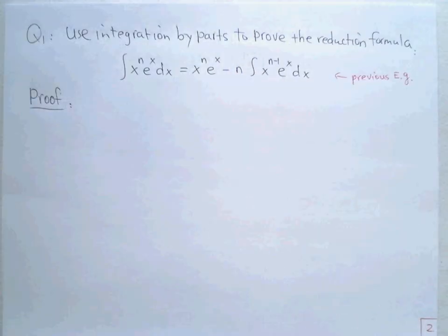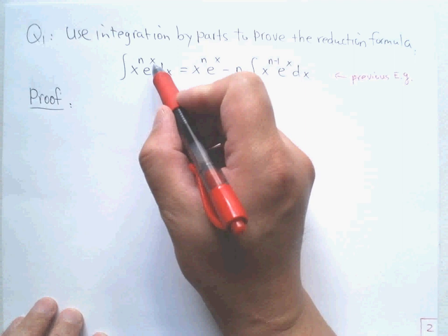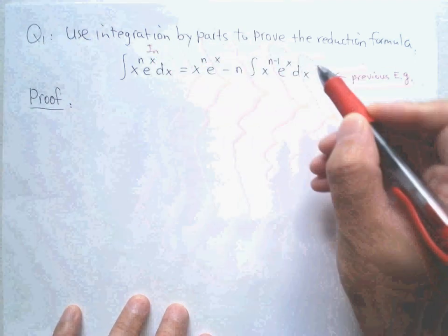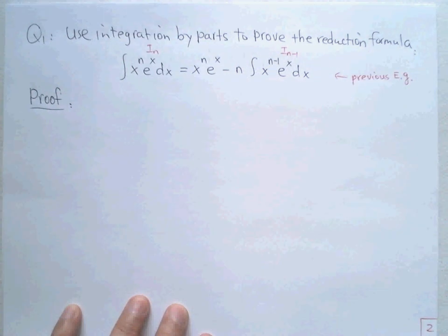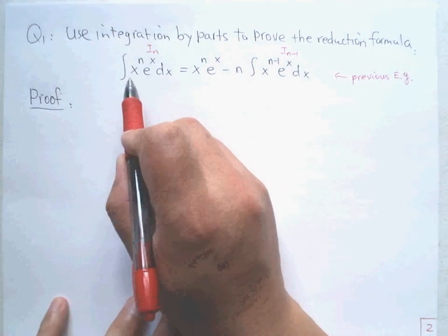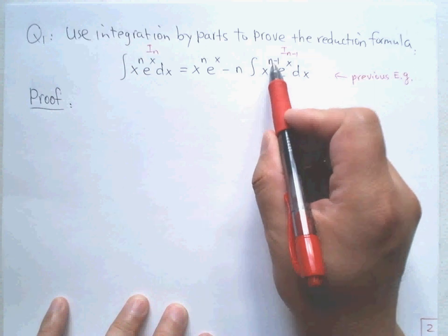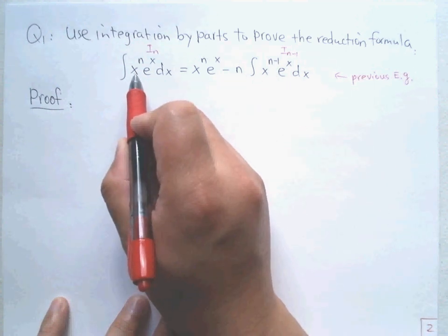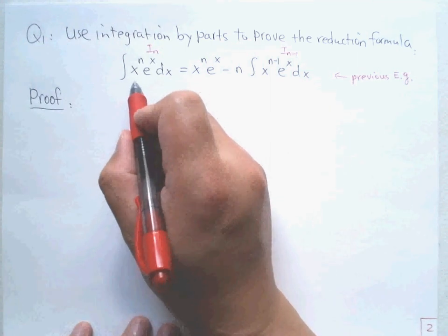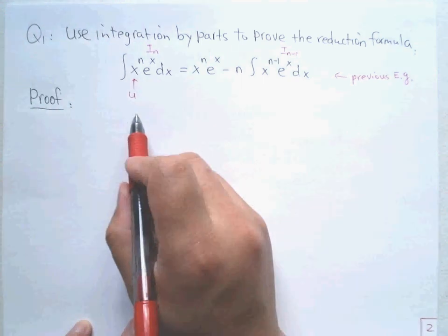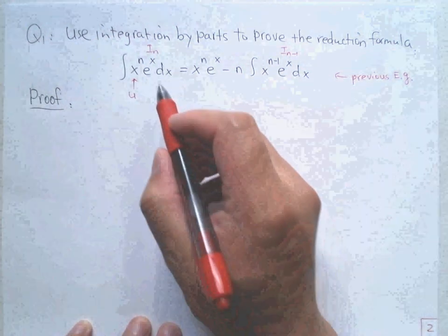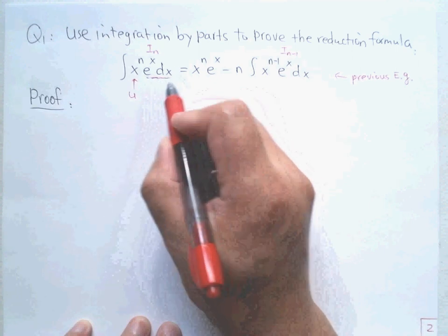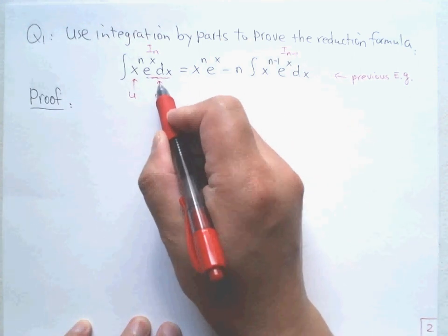Look at the example. This is exactly what we should do. This is I_n. So this is I_{n-1} — the power reduces by 1. How to find this, how to prove it? We need to set up u so that du reduces the power. We reduce the power to n minus 1. We definitely need to set up this as u, because du — taking the derivative — brings the power down to n minus 1. This is a power function. The remaining part should go to dv.